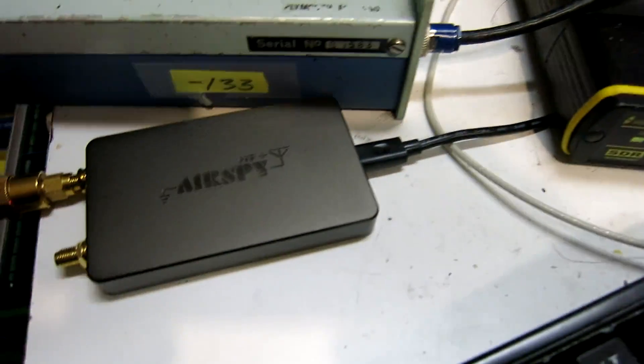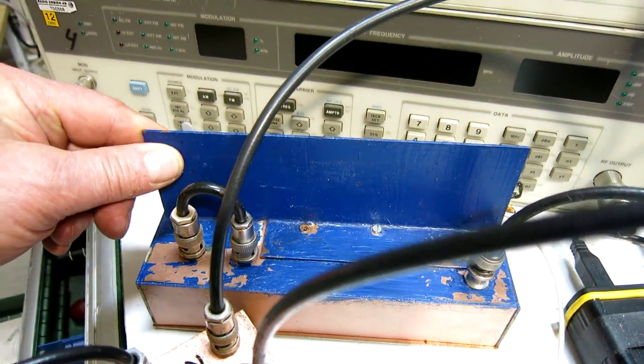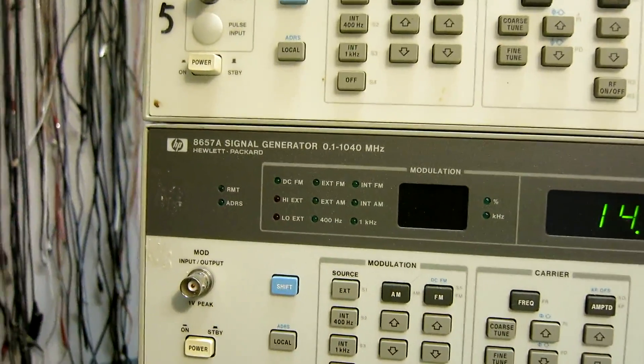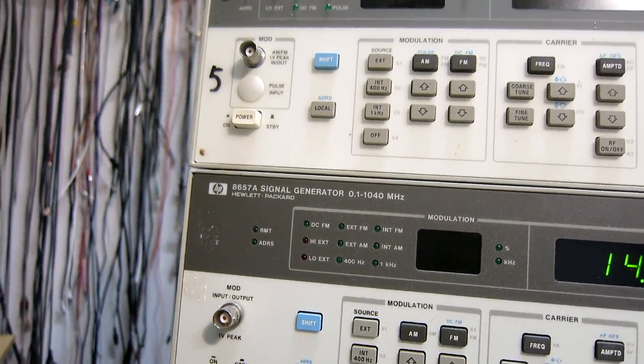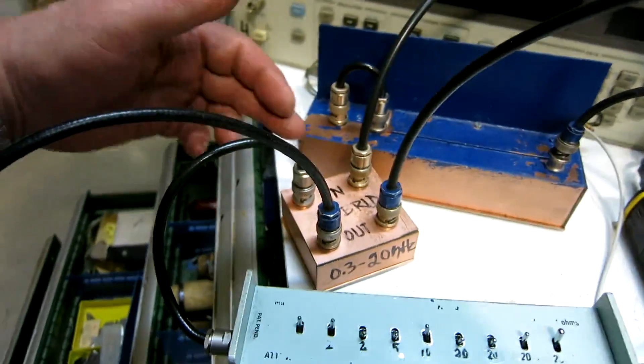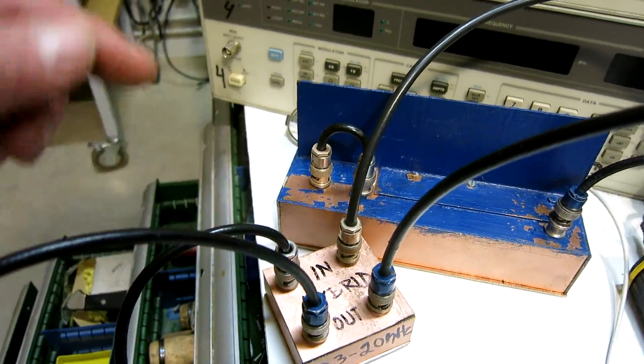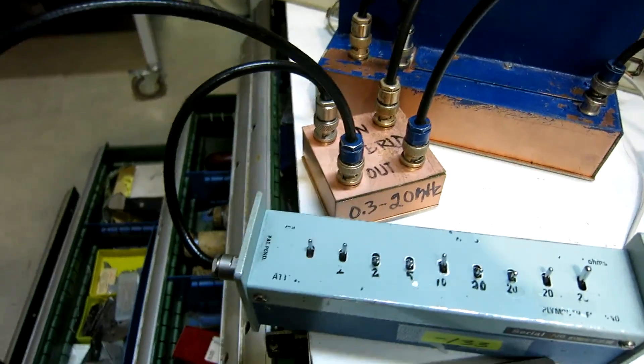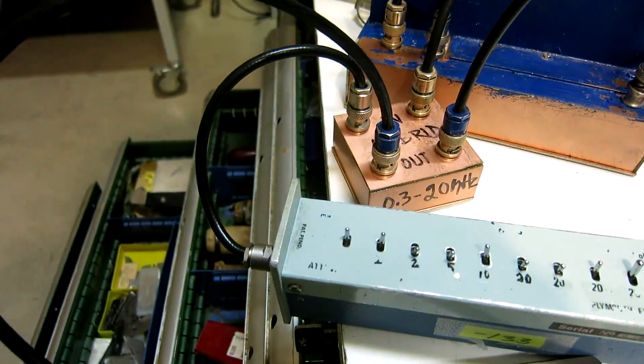To this end I have two signal generators: this high performance crystal oscillator and a standard signal generator, a Hewlett-Packard 8657A. I combine the two signal sources in a hybrid, so there are two inputs, one here and one here, and then there are two outputs, both of them attenuated by 3 dB, sending the same signal or equivalent signals into the two receivers.